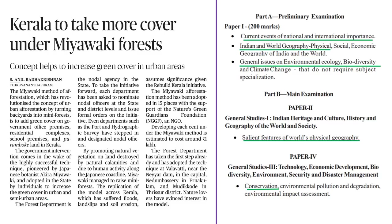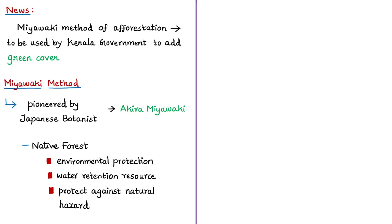Our first news article is based on physical geography. It discusses a method of afforestation known as the Miyawaki method. The news article mentions that the Miyawaki method of afforestation is going to be used by the Kerala government to add green cover on government office premises, residential complexes, school premises, and on Purampok land. Kerala has adopted this technique because it has already been successfully used by many individuals in the state to increase green cover in urban and semi-urban areas.